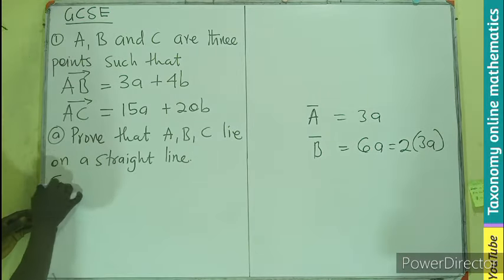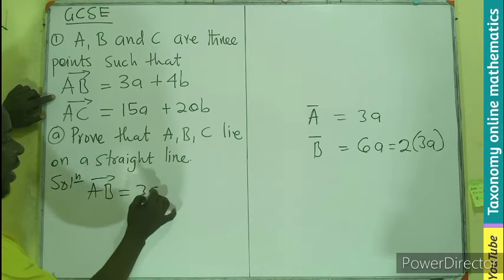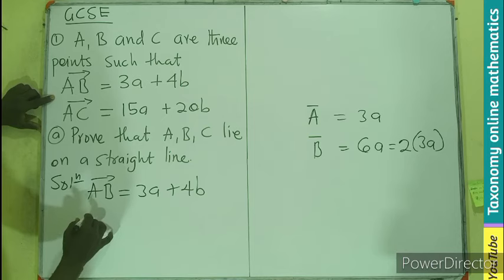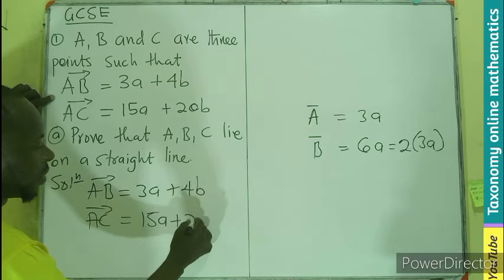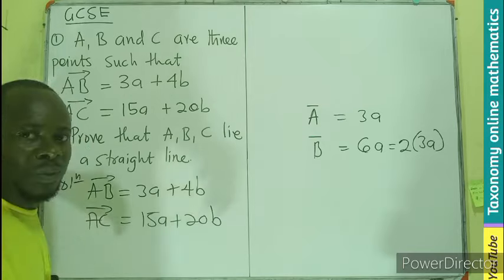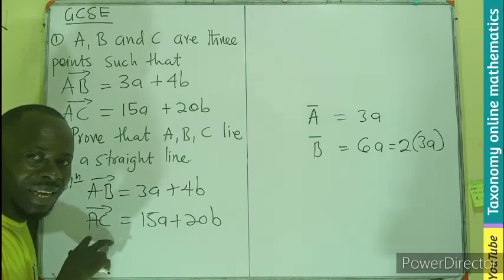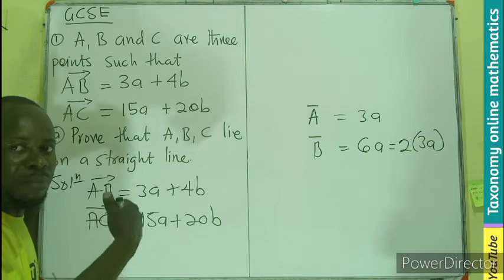Looking at the first vector, vector AB, which is 3a plus 4b. Then vector AC, which is also 15a plus 20b. We want to see whether these vectors AB and AC are multiple of themselves, as in parallel.